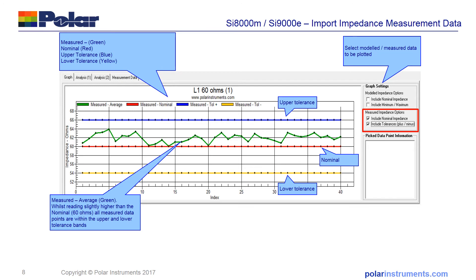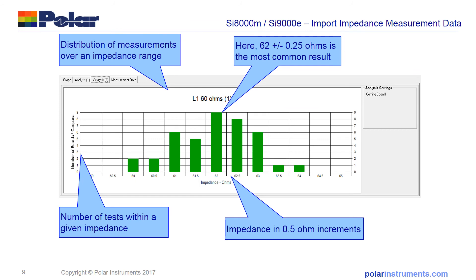This is a more realistic example — a 60 ohm nominal impedance plus or minus 10%, giving 66 ohm max and 54 ohms minimum. You can see that all results are well within specification but they're all sitting a little on the high side of nominal. In the impedance options we've included nominal impedance and the plus and minus tolerance on the actual measurement. There's also the ability to view the data as a histogram. Even with only a few coupons you can see a normal distribution starting to build up — the most common result is 62 ohms — giving you an idea of variation in a real production run.